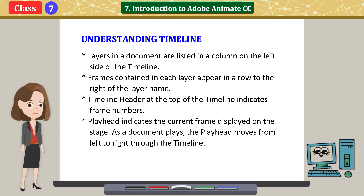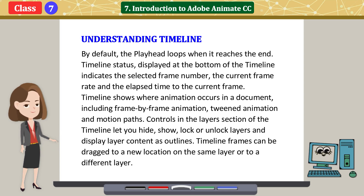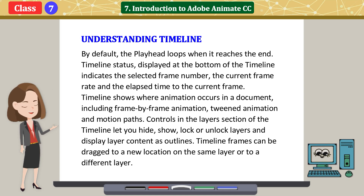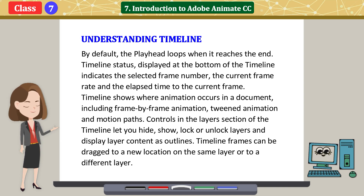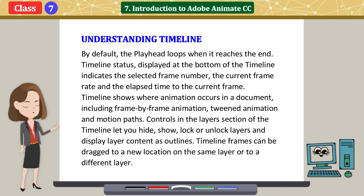As a document plays, the playhead moves from left to right through the timeline. By default, the playhead loops when it reaches the end. Timeline status, displayed at the bottom of the timeline, indicates the selected frame number, the current frame rate, and the elapsed time to the current frame. The timeline shows where animation occurs in a document, including frame-by-frame animation, tweened animation, and motion paths. Timeline frames can be dragged to a new location on the same layer or to a different layer.